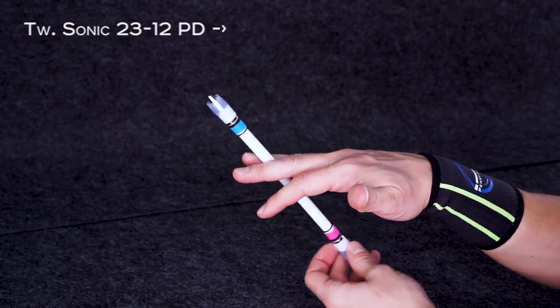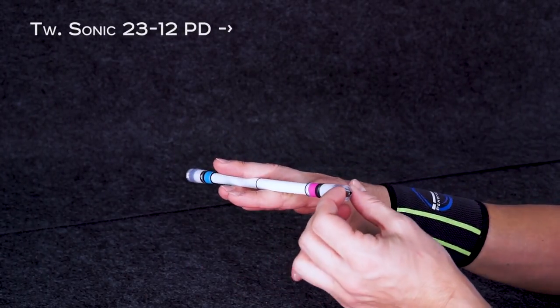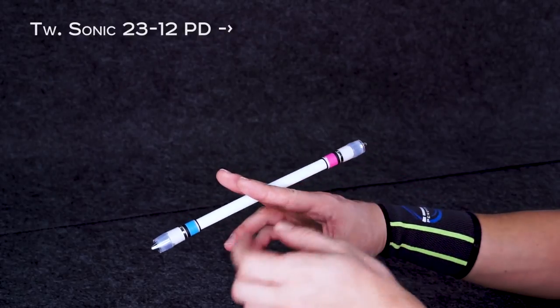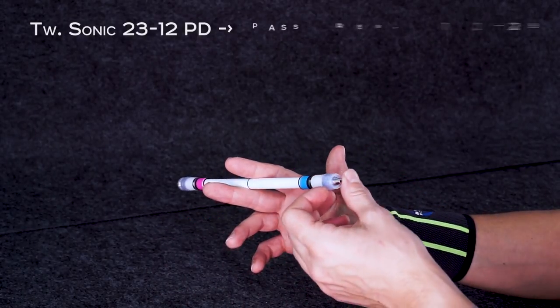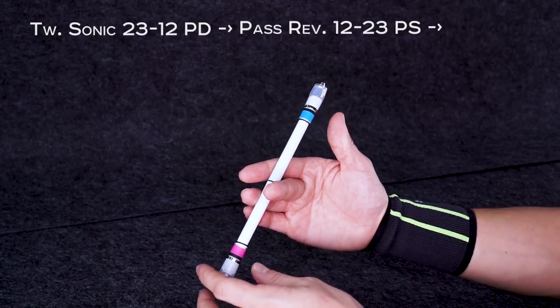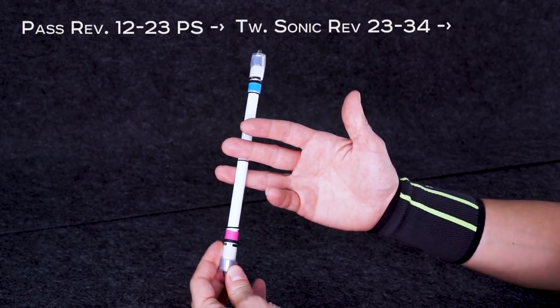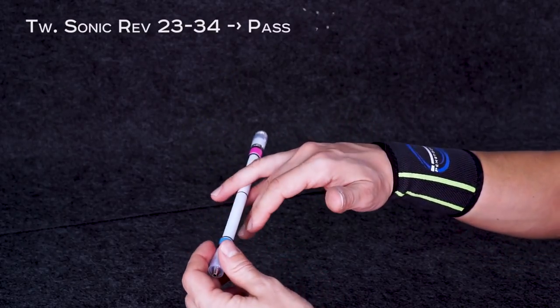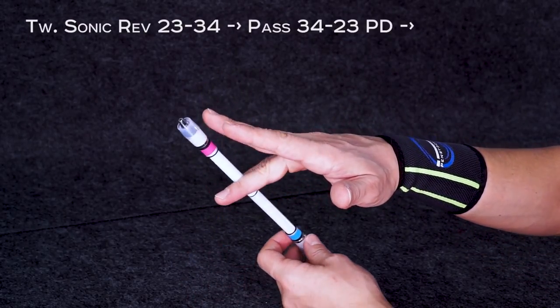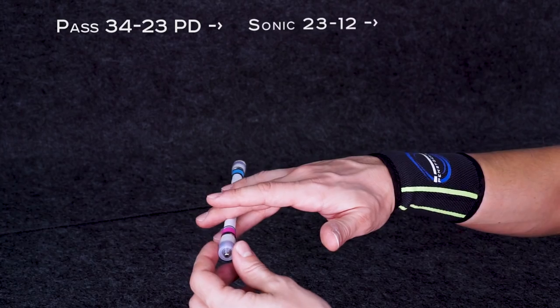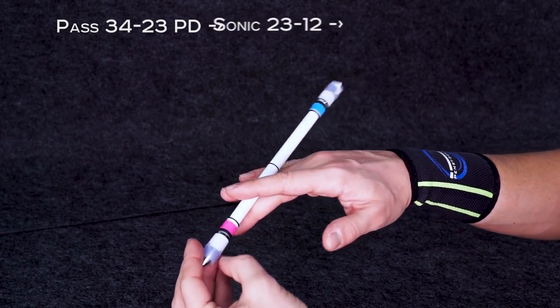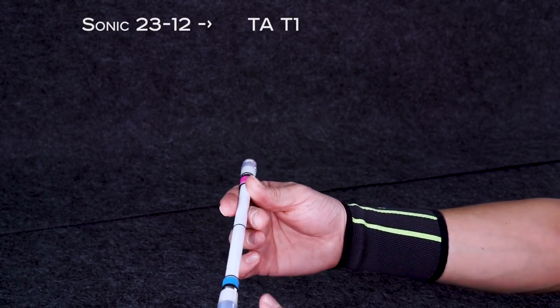So the mini combo looks like this: Twisted sonic 2312 palm down, Pass reverse 1223 palm side, Twisted sonic reverse 2334, Pass 3423 palm down, Sonic 2312, Thumbaround T1.